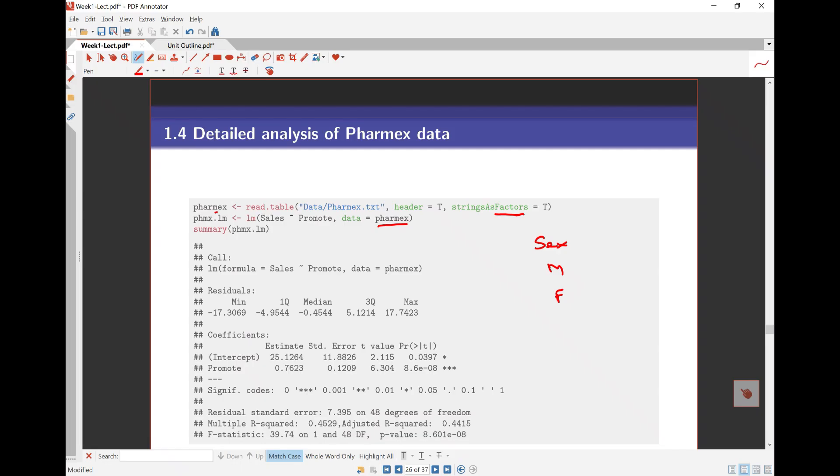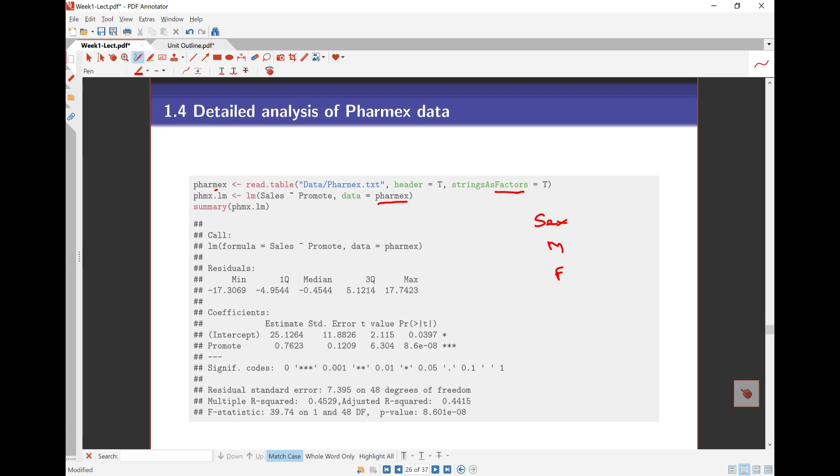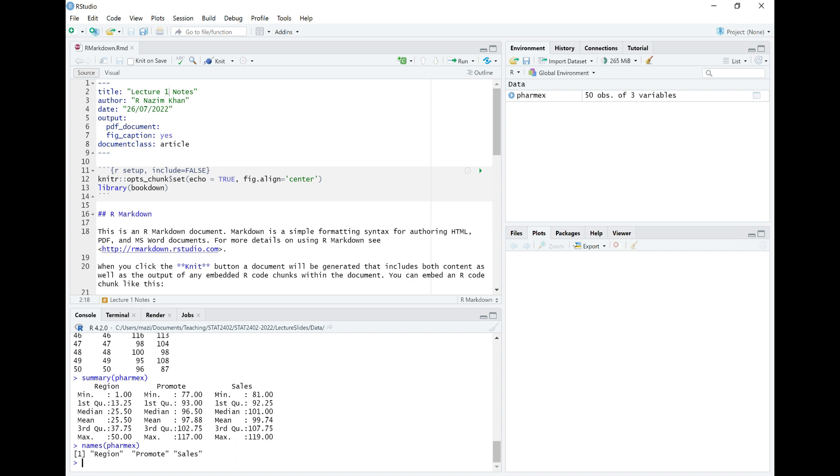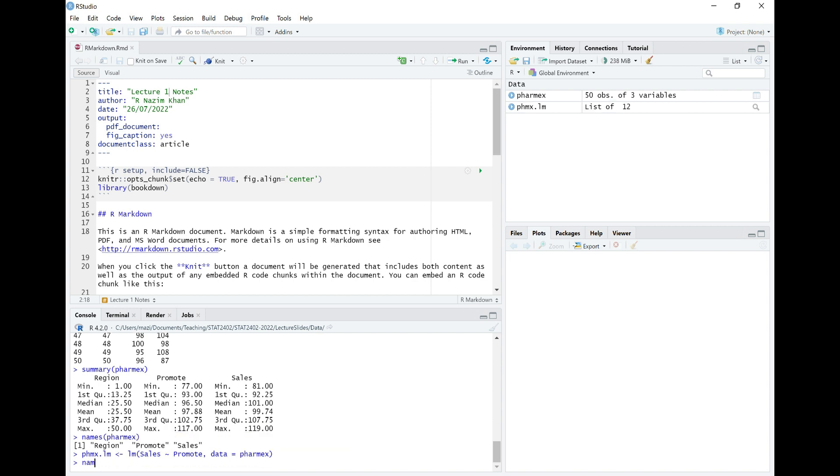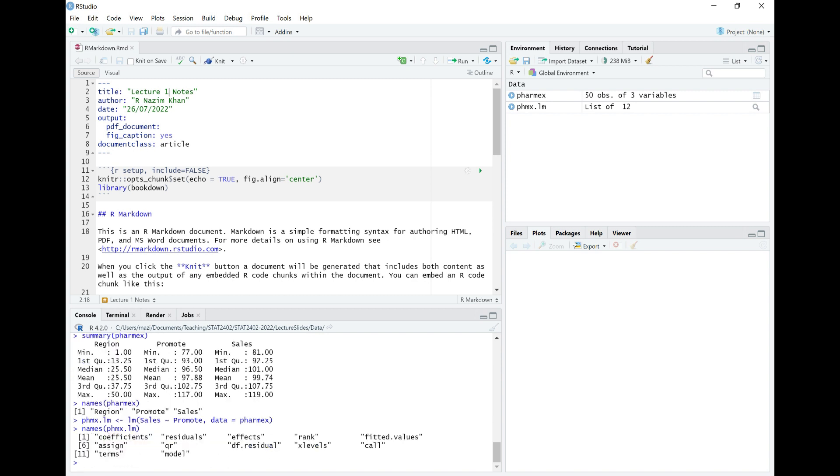Let's get back to this. So there is my model. Now, I can look at a summary of the Pharmex.lm. So let's go back to R again. And here I'm going to fit that particular model here. So I'm going to say Pharmex.lm is equal to lm. And I've got Sales versus Promote. And my data is equal to Pharmex.